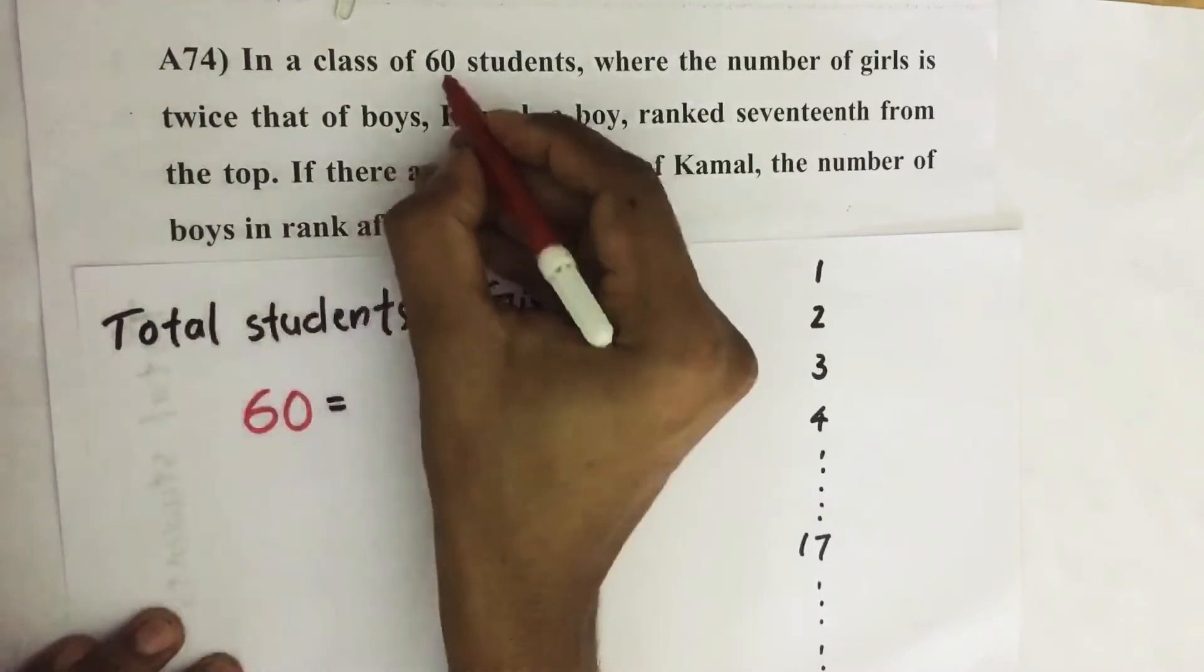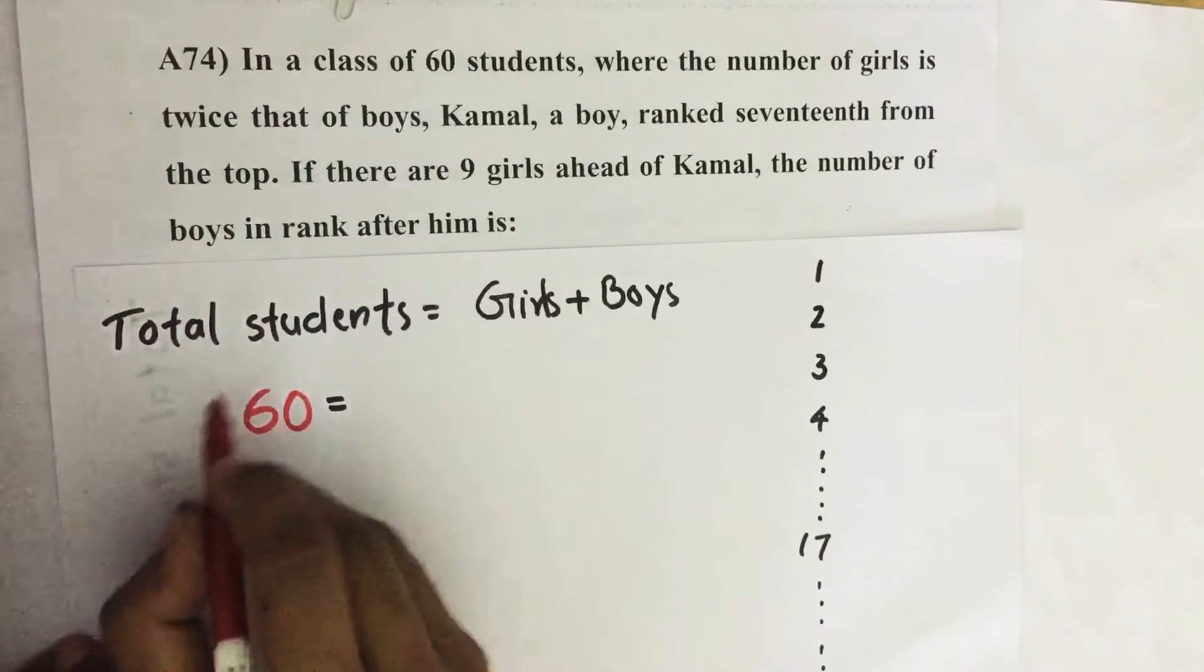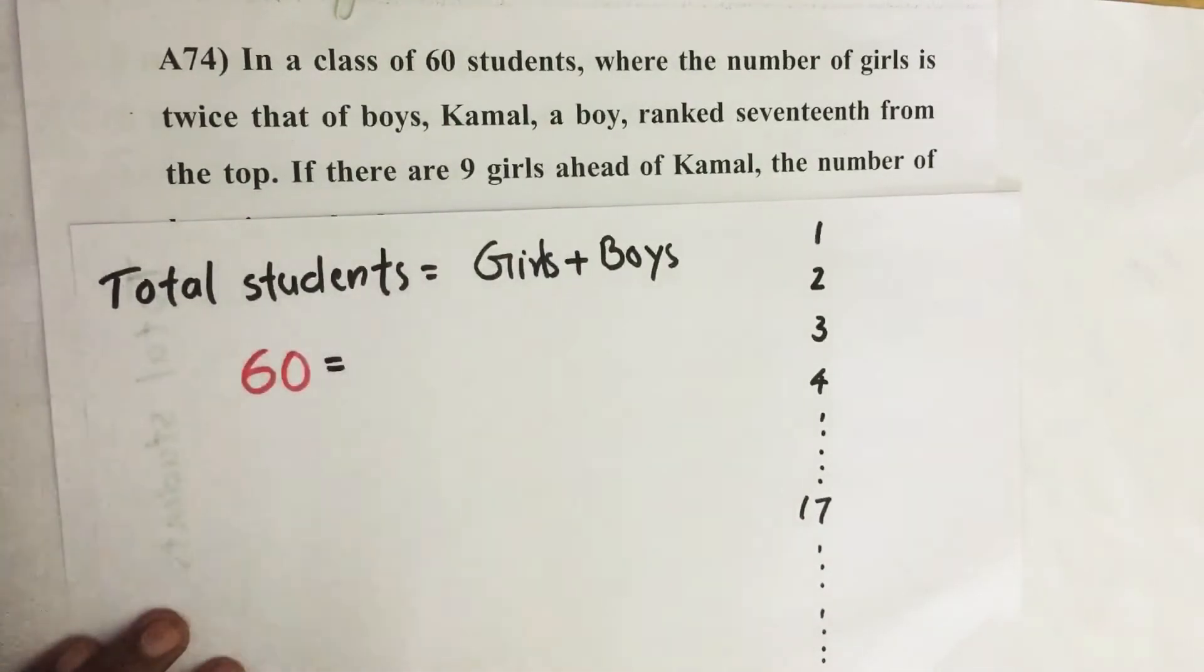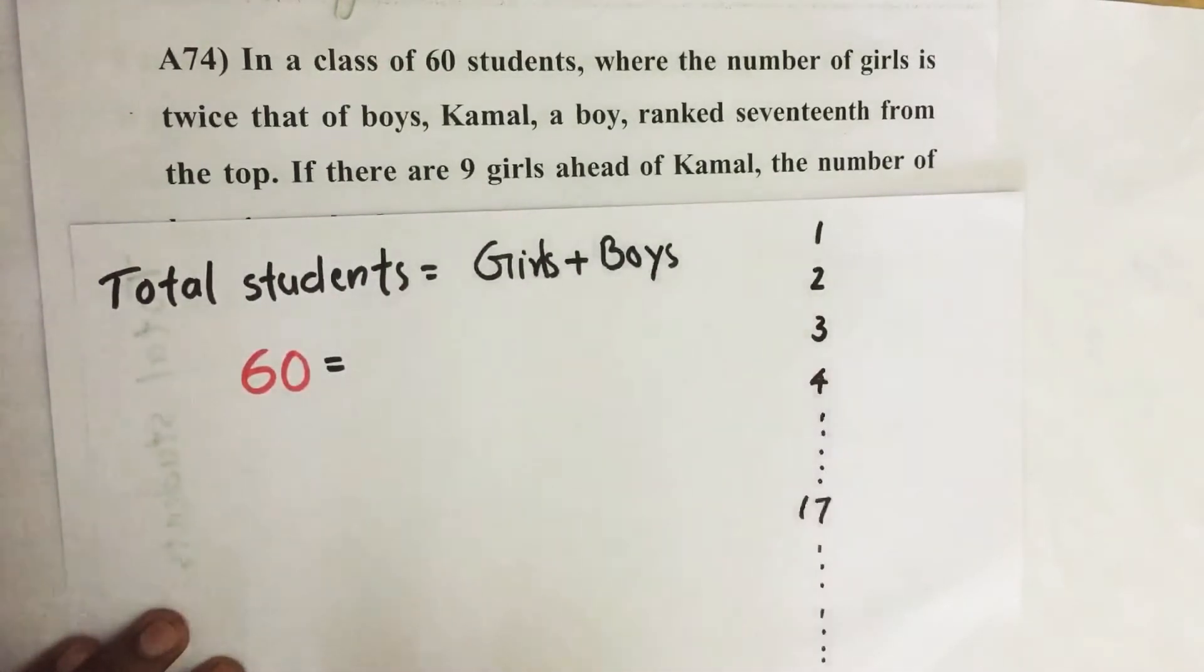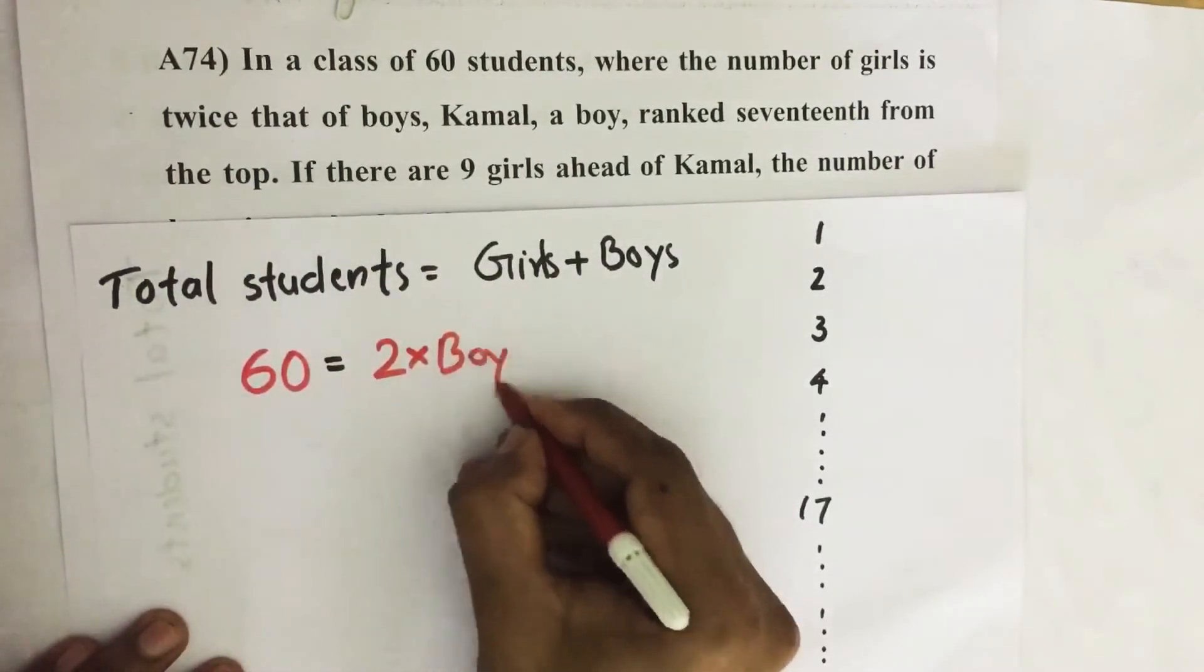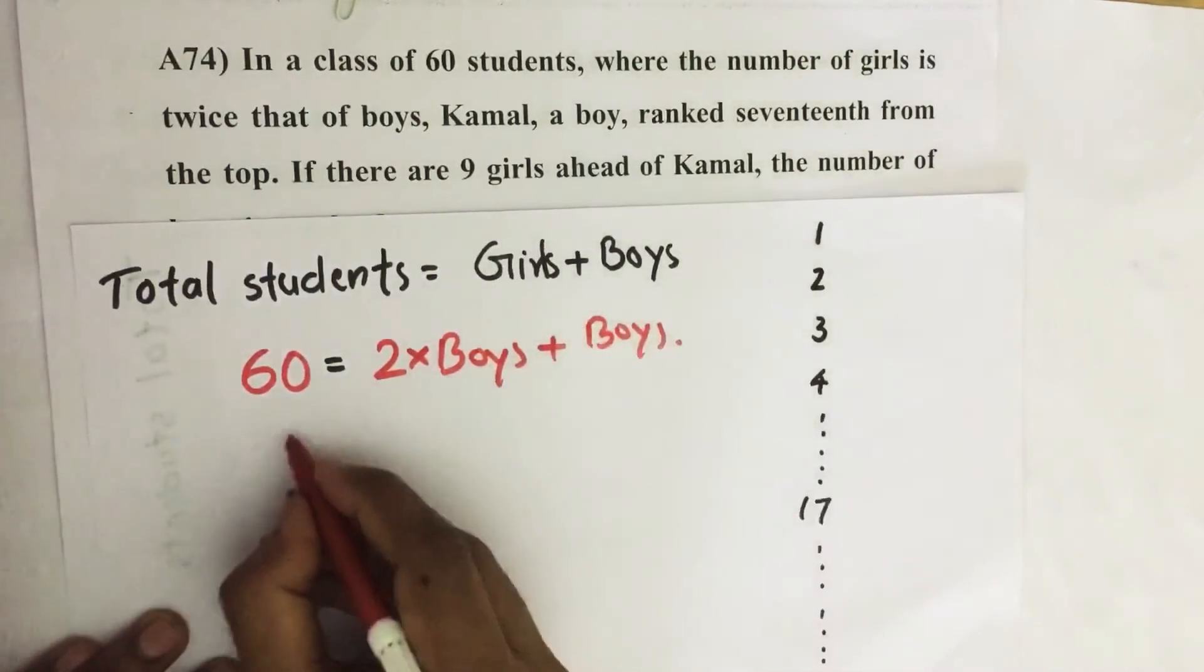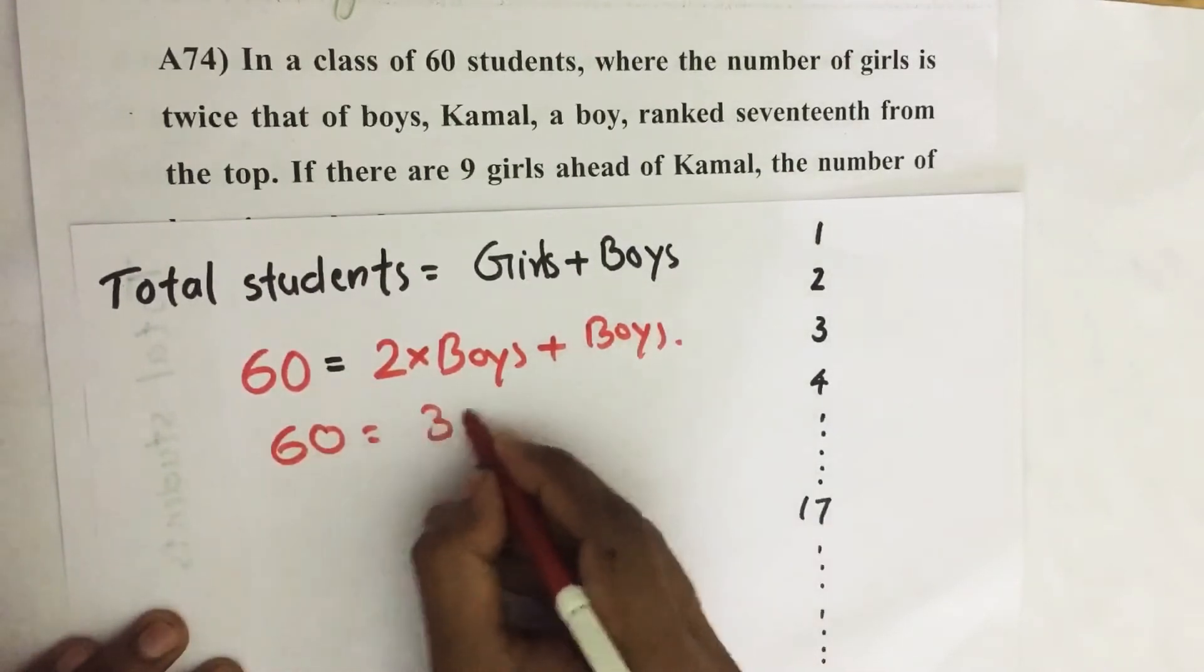It is very easy. If you can't find like that, you can find like this also. Total number of students equal to girls students plus boys students. Number of girls students equal to 2 into boys students plus boys students, then 60 equal to 2 boys plus boys, 3 boys.